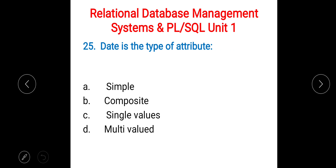Next: dash is the type of attribute for data. A) simple, B) composite, C) single-valued, D) multi-valued. The right answer is B) composite.